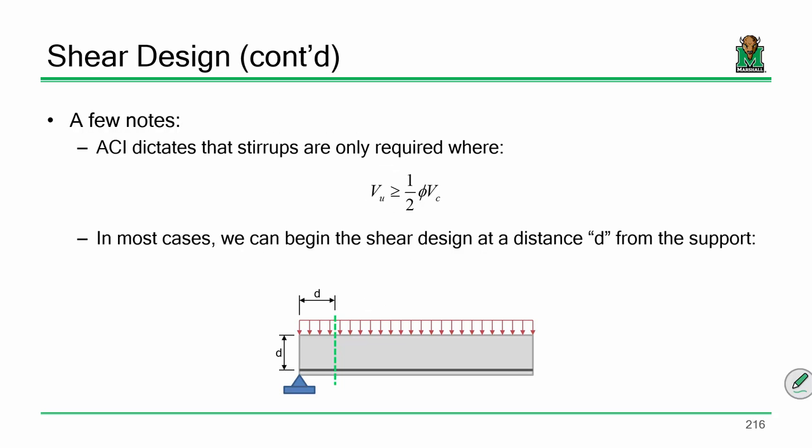There are a few caveats associated with this. ACI states that while you don't necessarily need stirrups from a strength standpoint in some regions of low shear, ACI dictates that you must provide stirrups anywhere that the shear is greater than or equal to half of phi VC.